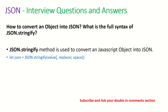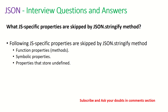How do you convert any object into JSON — what is the full syntax of JSON.stringify? The JSON.stringify method is used to convert a JavaScript object into JSON. You can create an element and write: let json = JSON.stringify(...) passing the values to it. What JavaScript-specific properties are skipped by JSON.stringify? The following properties are skipped: function properties, symbolic properties, and properties that are stored as undefined. So if you pass any function properties or symbolic properties, they will be skipped by JSON.stringify.